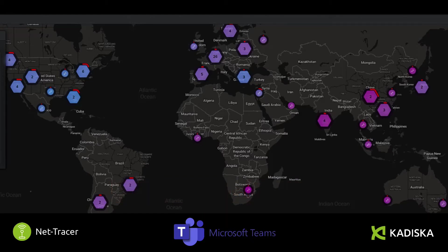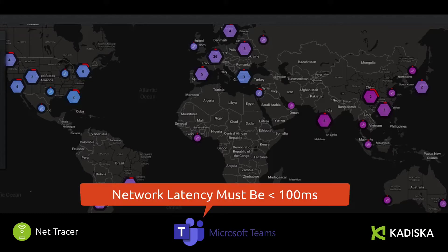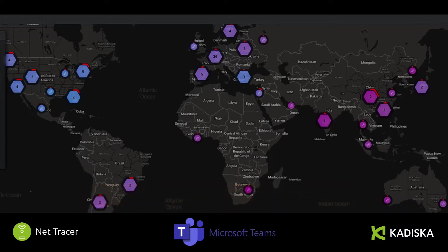As a best practice, Microsoft recommends keeping the network latency below 100 milliseconds to guarantee proper streaming traffic performance. To achieve this, Microsoft recommends connecting as quickly as possible to its backbone, so the ISP you are connected to should ideally peer directly to the Microsoft network.